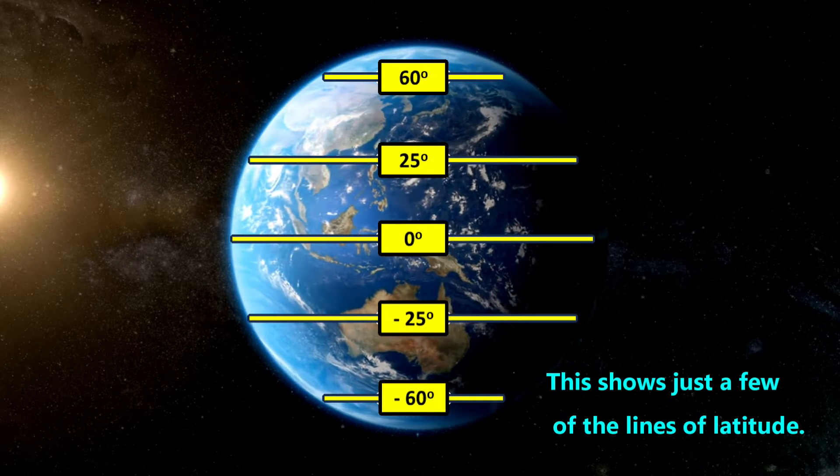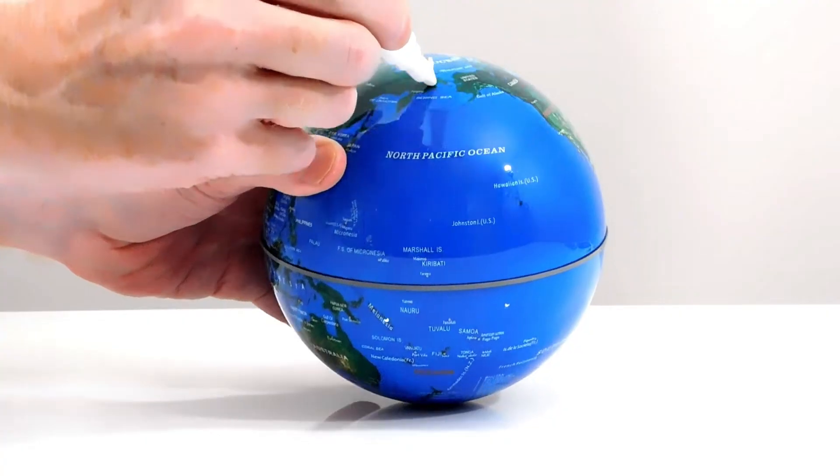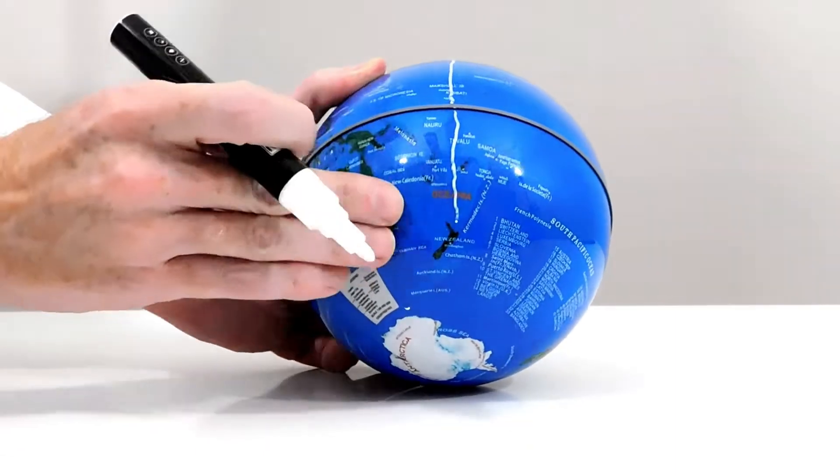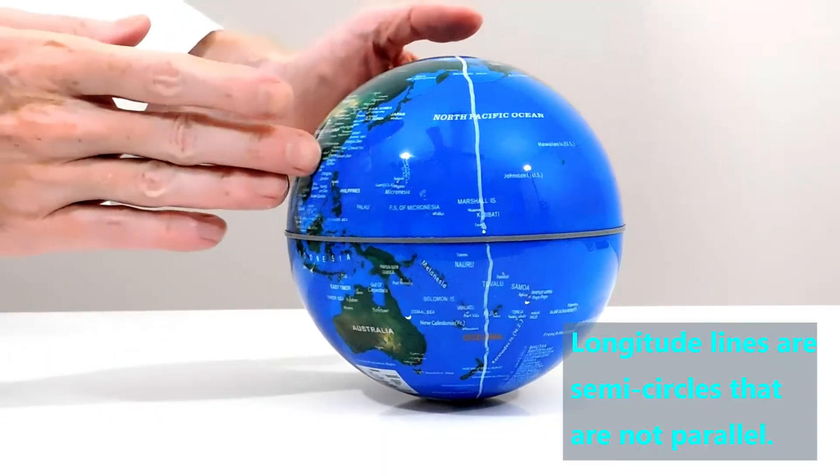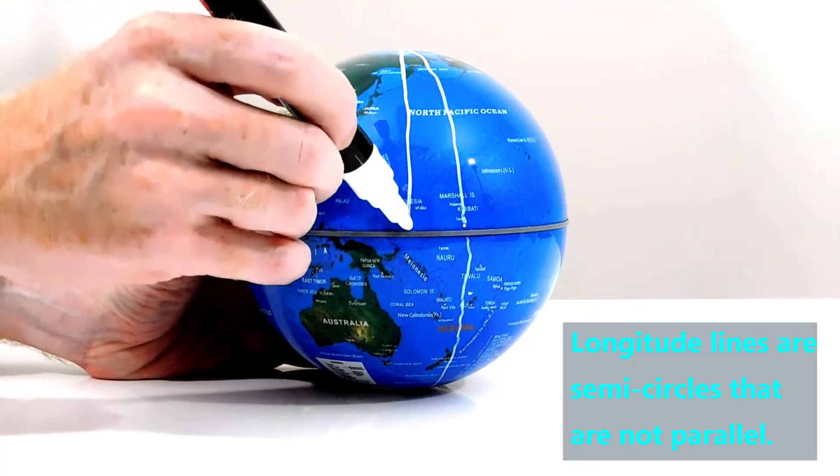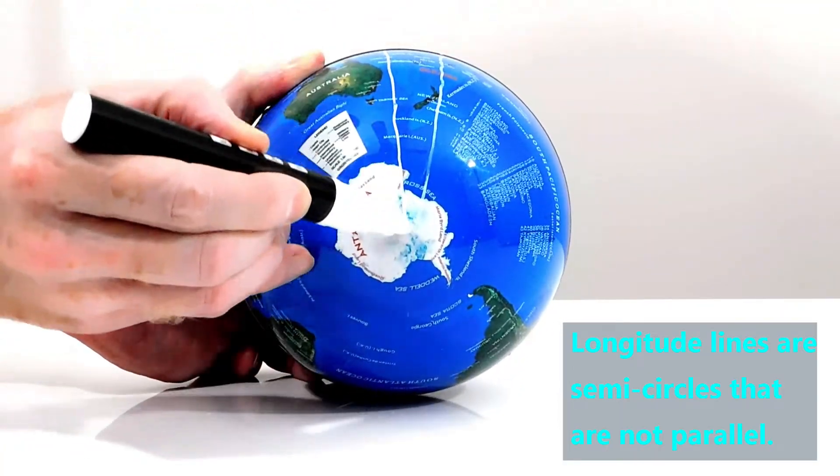We call the South Pole negative 90 because it's in the opposite place as the North Pole. Next, let's look at how to find the lines of longitude. Each line of longitude runs from the North Pole to the South Pole. Unlike the circles of latitude, lines of longitude are not circles. They are half-circles. Each one we draw will be close to its neighbor and crosses the equator at a perpendicular intersection.